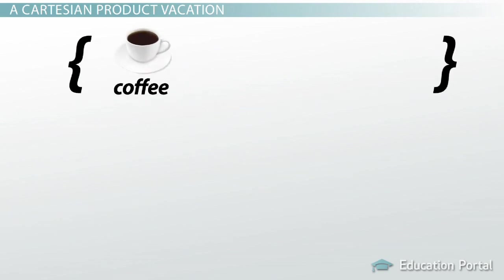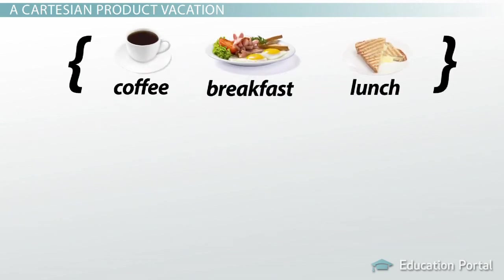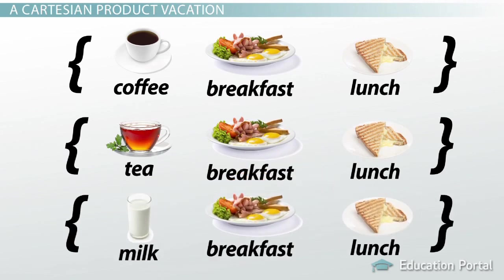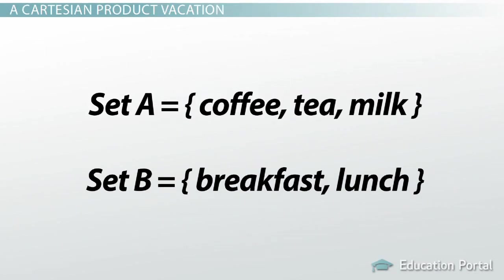So I can have coffee with breakfast or lunch, tea with breakfast or lunch, or milk with breakfast or lunch. It is like you distribute set A into set B. Coffee distributed to breakfast and lunch. Tea distributed to breakfast and lunch.